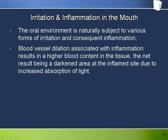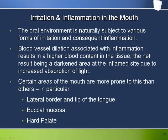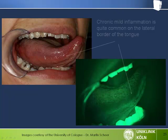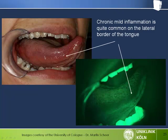The oral environment is naturally subject to various forms of irritation and consequent inflammation. Blood vessel dilation associated with inflammation results in a higher blood content in the tissue, with the net result being a darkened area at the inflamed site due to increased absorption of light. Certain areas of the mouth are more prone to this, in particular the lateral border and tip of the tongue, the buccal mucosa, and the hard palate. It's quite common for the lateral border and tip of the tongue to be inflamed due to chronic irritation from teeth, and thus appear darker under Velscope.